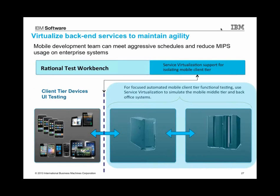We also have technology that helps you virtualize backend services. In DevOps, you want to do your testing in a production-like environment, but you don't always have access to production systems when you're not in production. One option is going through a rigorous process of getting production data, modifying it, setting up systems that seem like production systems, and investing in that hardware. Virtualization is a really cost-effective alternative. Service virtualization allows you to actually virtualize all the middleware and back-end stuff that your mobile app is talking to, so you can isolate the client tier and focus on ensuring the quality of the mobile application, testing it against production-like virtualized systems in the backend.